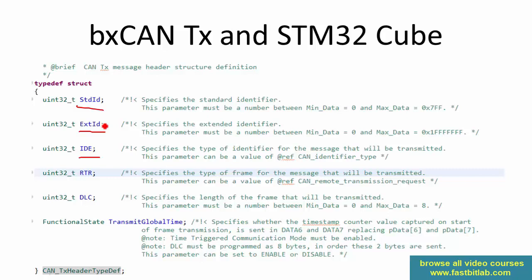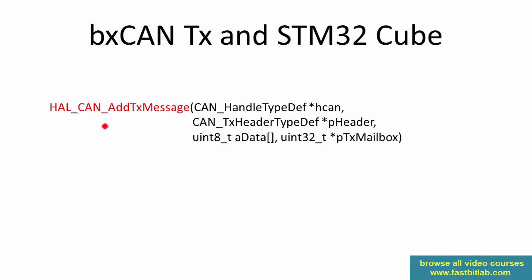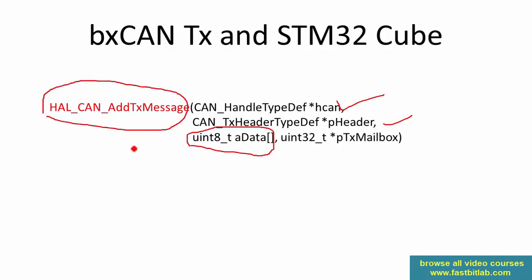Once you fill up this header info, you can call this API in order to transmit your message. This API will put that message into the mailbox and trigger the transmission. In this API, you have to give the pointer to the handle, pointer to the header you just filled, and the data array. The API will find which mailbox is free, put your data into that mailbox, trigger the transmission, and update a variable to let you know which mailbox was used.